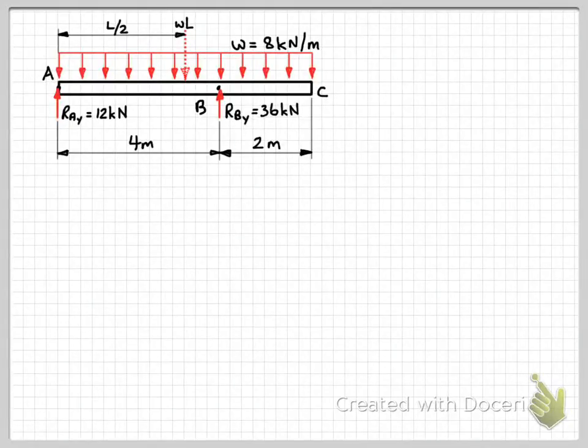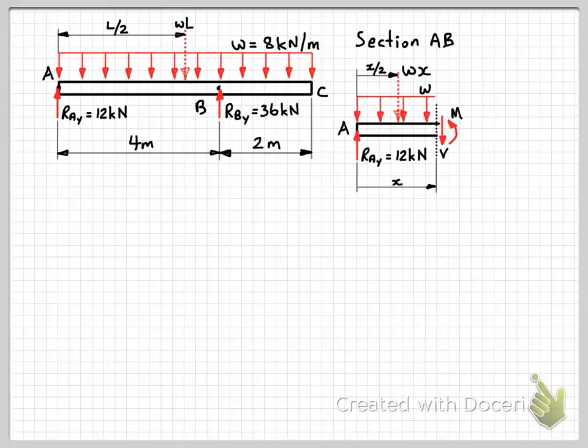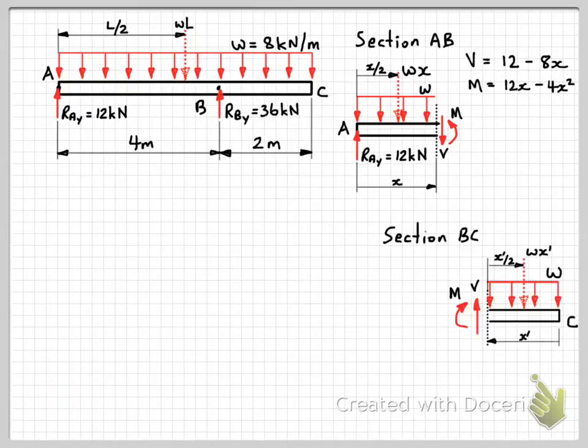Now that we have our shear and bending moment equations, we can start to think about drawing the shear and bending moment diagram. For section AB, the equations were shear force equals 12 minus 8x, and the bending moment was 12x minus 4x squared. For section BC, where we came from the right-hand side and used x dash, we have the shear force equals 8 times x dash, and the bending moment equation was minus 4x dash squared.